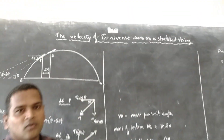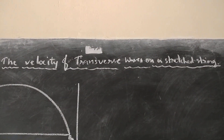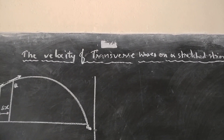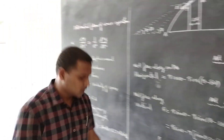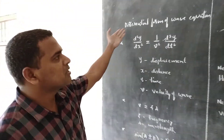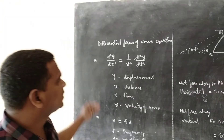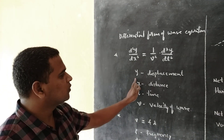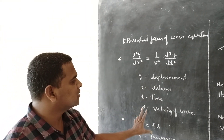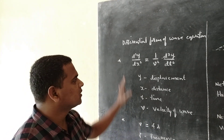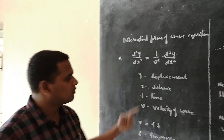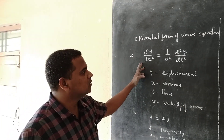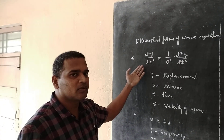Before deriving the expression for velocity of transverse waves on a stretched string, we will recollect some of the things which we make use of while deriving this expression. We basically know the differential form of the wave equation, which is d²y/dx² = (1/v²) d²y/dt². Here y is displacement, x is distance, t is time, and v is velocity of the wave. This is the most general differential form of the equation, and it holds good for longitudinal waves as well as transverse waves for one-dimensional, two-dimensional, and three-dimensional waves.